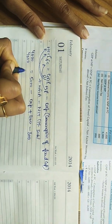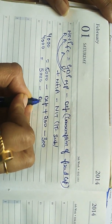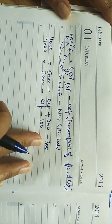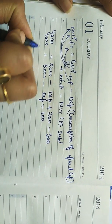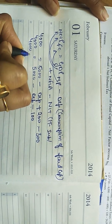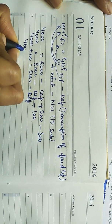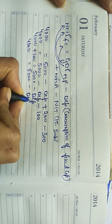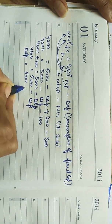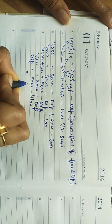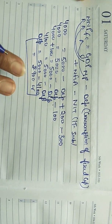So: 4000 = 5000 minus depreciation plus 200 minus 300. Since 300 minus 200 gives minus 100, we get 4000 = 5000 minus depreciation minus 100. This gives 4100 = 5000 minus depreciation, so depreciation = 5000 minus 4100 = rupees 900 crores. So consumption of fixed capital is rupees 900 crores.